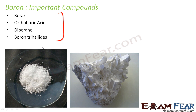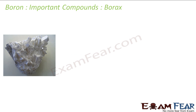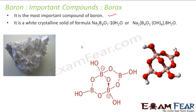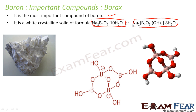The first compound is borax. Borax is a very important compound of boron and its formula is Na2B4O7·10H2O, or you can write it as Na2[B4O5(OH)4]·8H2O. Both are the same actually.